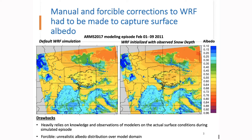These examples illustrate that corrections need to be made to WAF in order to capture surface characteristics, in particular albedo. However, these corrections have drawbacks: they are performed on a case-by-case basis, there is no standard method, and they heavily rely on knowledge and observations of actual surface conditions during the simulation episodes, which are not always available. They also tend to create unrealistic albedo distributions over the modeling domain due to the lack of ground observations.